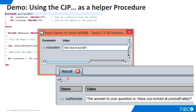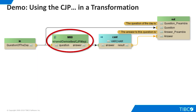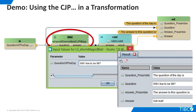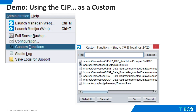We can also use our custom Java procedure in a transformation. We drag it into the transformation, feed it a question, and use the response as part of a new data structure. Because our custom Java procedure returns a single scalar output, we can promote it to a custom function in TDV. To do this, open the Administration menu in Studio, select Custom Functions, and select the checkbox for M8B.